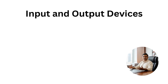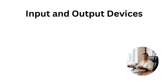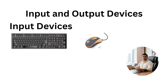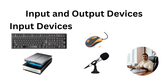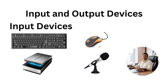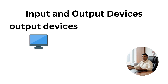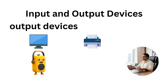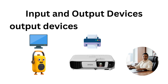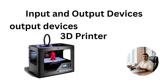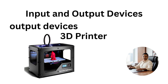Input and output devices. Now let's talk about how we interact with a computer. Input devices like keyboard, mouse, scanner, microphone, or even voice commands allow us to send data into the system. On the other side, output devices like monitors, printers, speakers, and projectors present the results in a form we understand. And did you know? Today we even have 3D printers that can create real physical objects from digital designs.